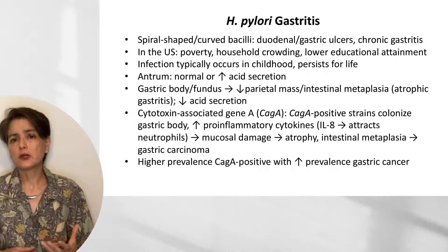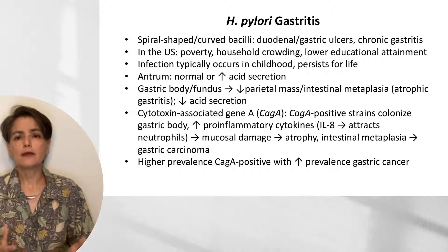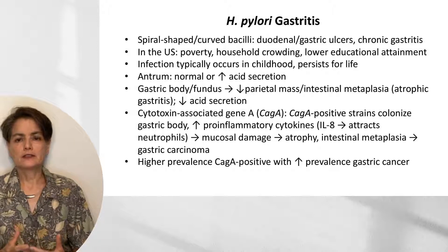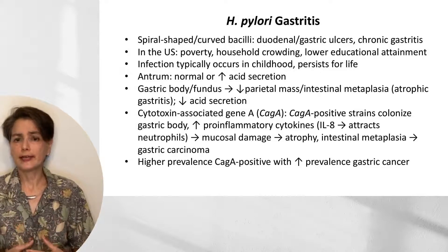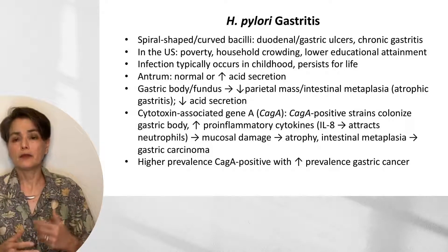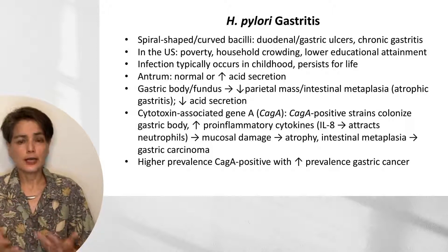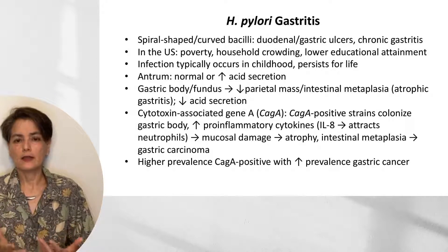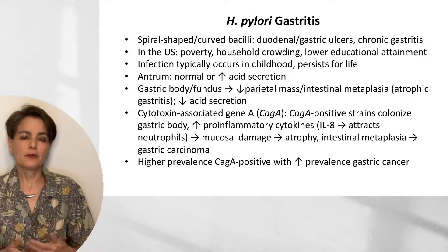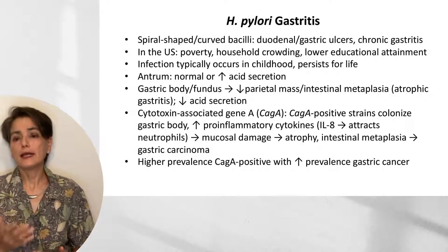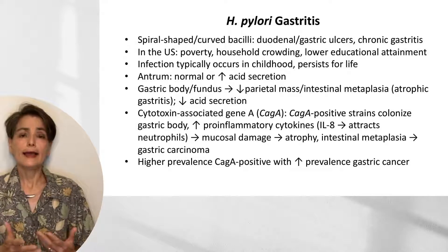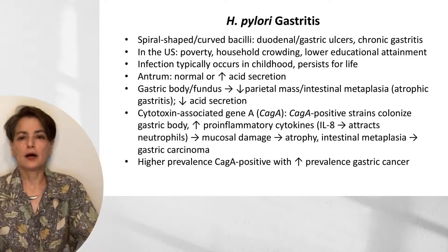In areas with a high prevalence of gastric cancer, there tends to be a higher prevalence of H. pylori strains that are CAG-A positive. For example, in areas with a lower incidence of gastric cancer, about 50% of strains would be CAG-A positive. But in areas with a very high prevalence of gastric cancer, that can be 90% CAG-A positive.